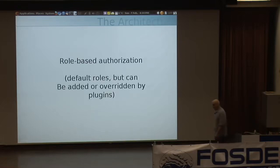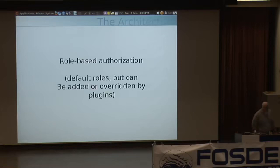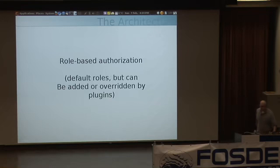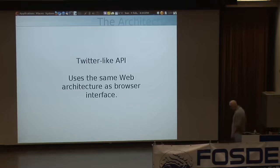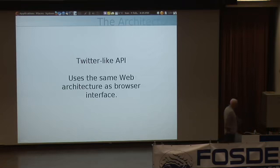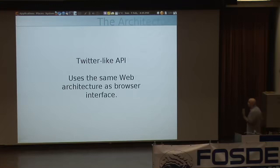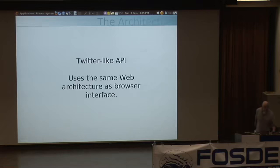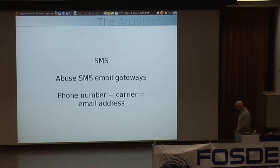We also have a role-based authorization system. We assign roles to users within the system, and those roles get particular rights. We have a bunch of default roles, but different roles can be added or overridden by plugins. Another thing we have is a Twitter-like API. It's very similar to our web architecture — the same front-end controller system — but it puts out JSON or XML instead of HTML.